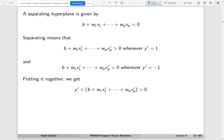At the same time, it means that our classifier f hat of x is just the sign of this expression: b plus w1 x1 plus and so on, plus wp xp. And so this is our classifier.